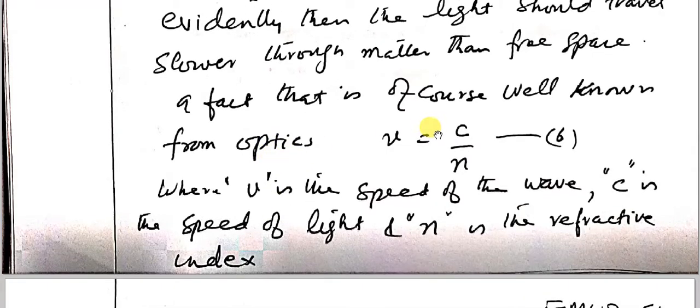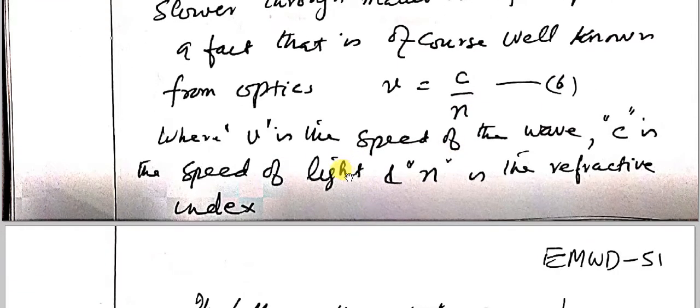Speed of the wave in a medium is given as V equals C by n, where n is the refractive index, called equation number six, where V is the speed of the wave, C is the speed of light, and n is the refractive index.